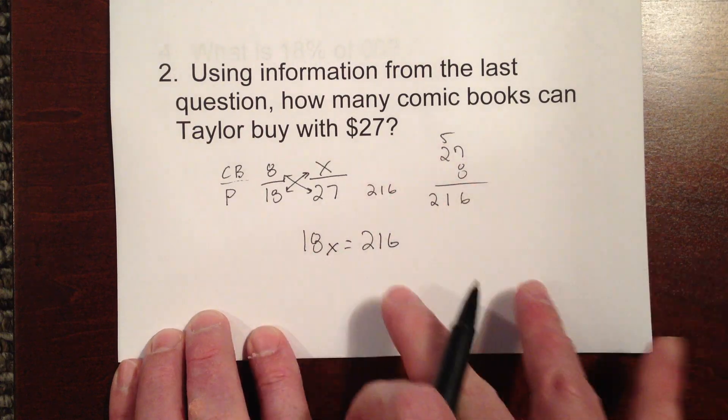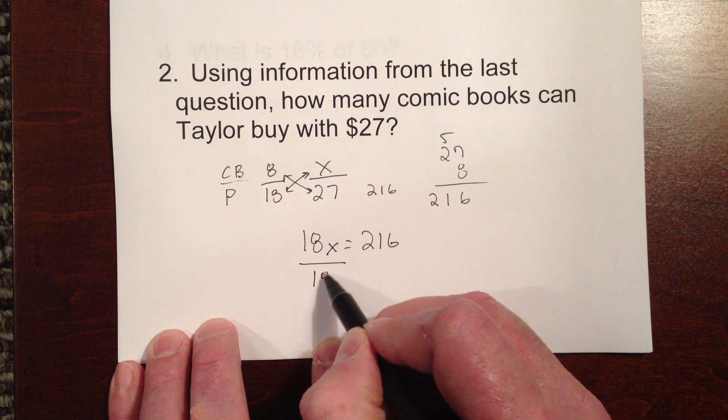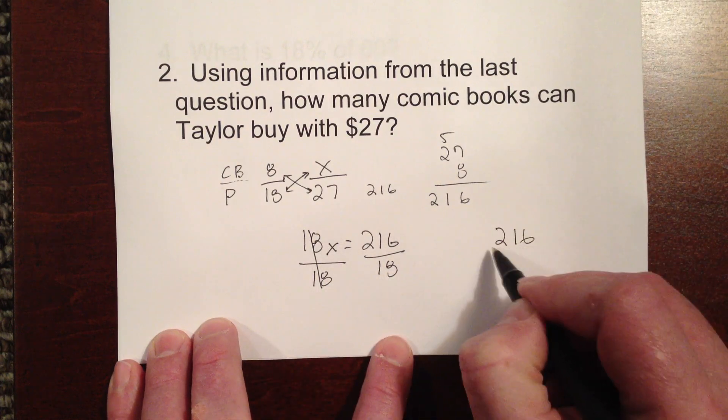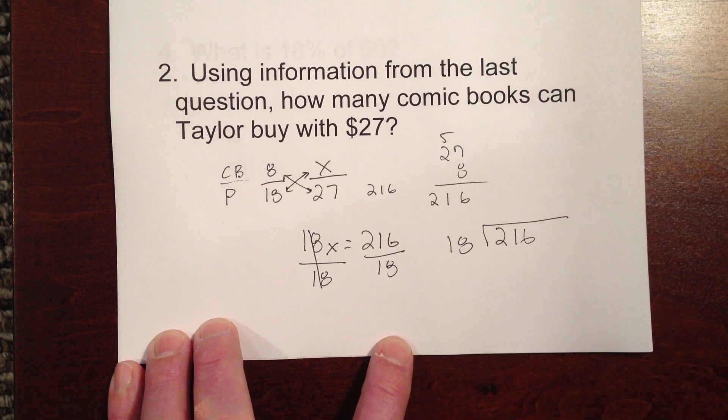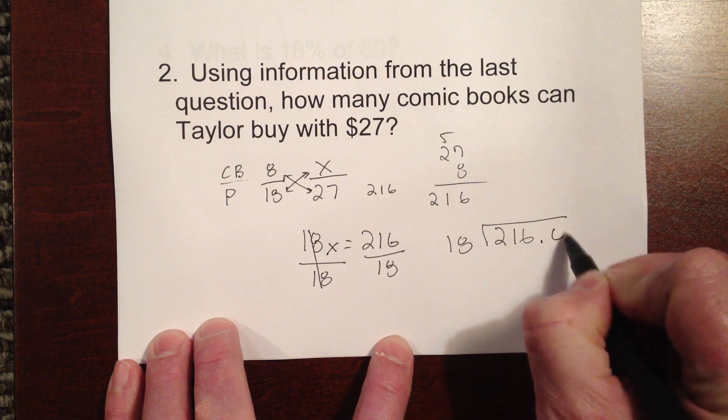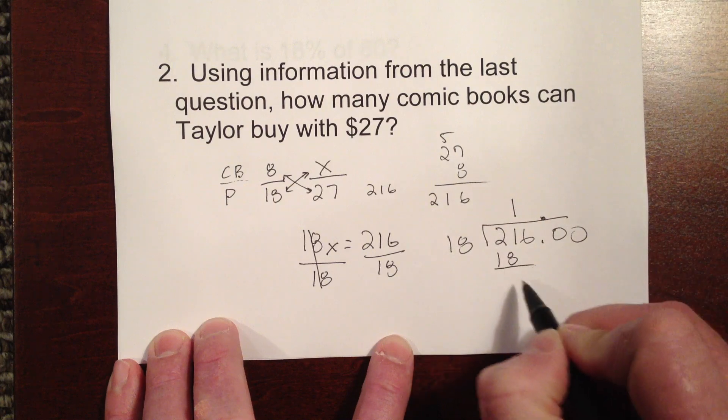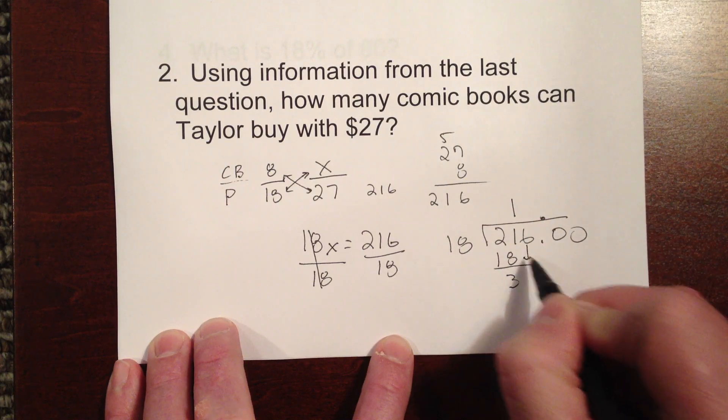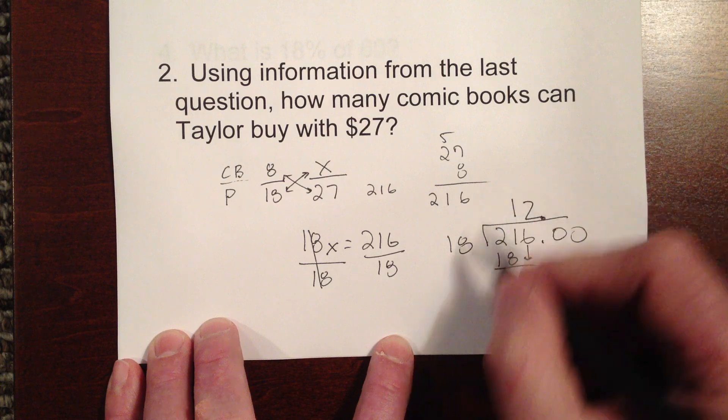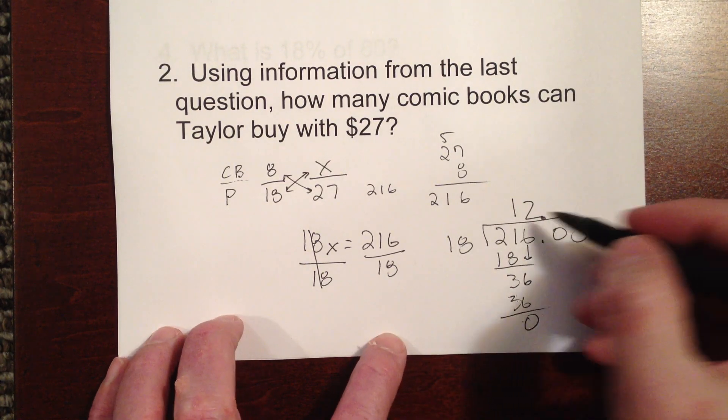And now we've got a one-step equation where we would just solve for the variable. Well, our poor little x is being multiplied by 18, so we would divide by 18 here. And this would cancel out. And we're left with 216 divided by 18. 18 will go, and let's go ahead and do this just in case we need these. 18 will go into 21 once. I've got a leftover, or sorry, a remainder of 3, and I'm going to bring down my 6. 36. So I've got 18 will go into 36 twice. And then I'm going to have 36 here for a remainder of 0.